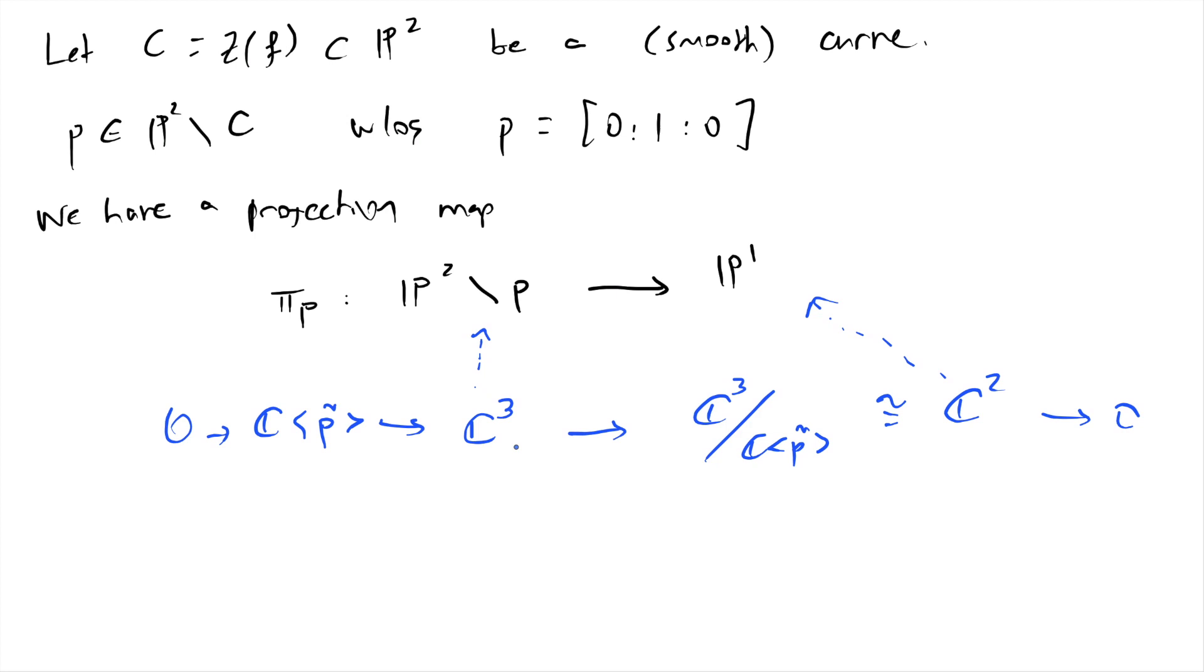We don't have to be so fancy when we're dealing with this point p. There's a very simple way to represent this projection map. Let's continue with our assumption that p is that point. I can write my projection map simply as sending x, y, z to x, z. As you can see, precisely the point (0,1,0) maps to (0,0). So it's not well-defined at that point since (0,0) is not a point in p1.